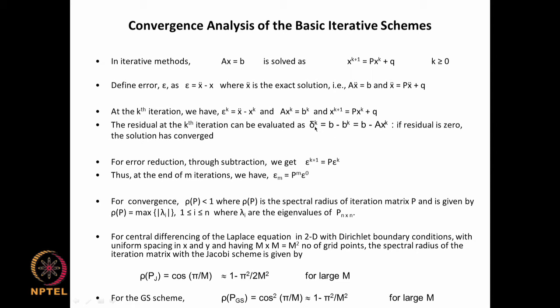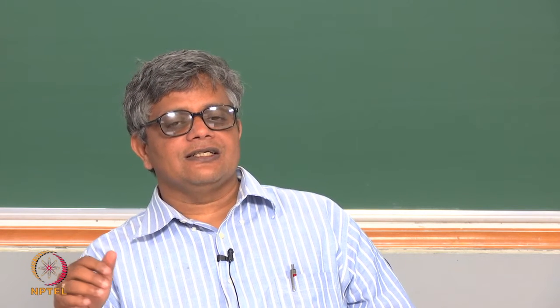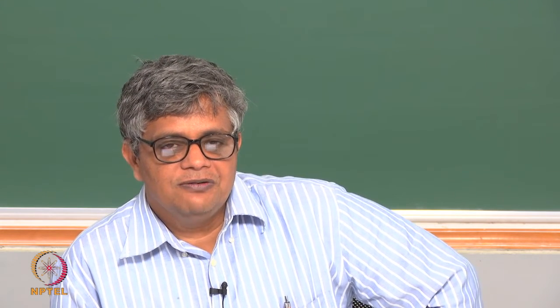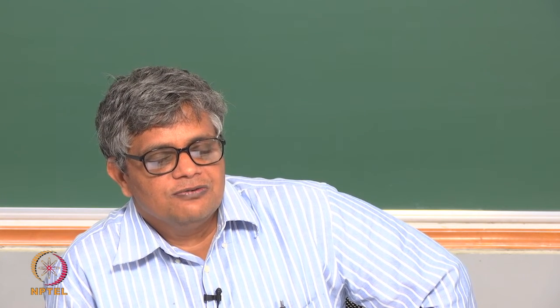The residual delta^k = b - A·x^k can be readily computed, since b is given, x^k is the current estimate, and A is known. If the residual is zero the solution has converged; if not zero, we need to do more iterations. If the residual is very small — say the current and previous iteration values differ only in the fifth or eighth decimal place — we may say it is accurate enough and stop.